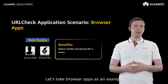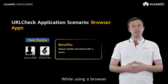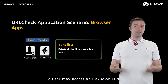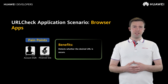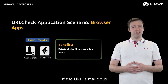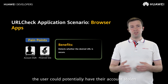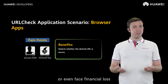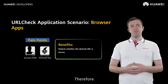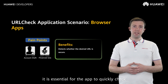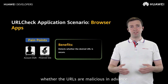Let's take browser apps as an example. While using a browser, a user may access an unknown URL. If the URL is malicious, the user could potentially have their account stolen or even face financial loss. Therefore, it is essential for the app to quickly check whether the URLs are malicious in advance.